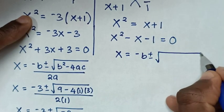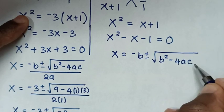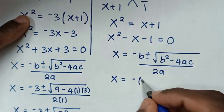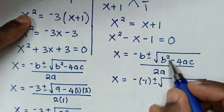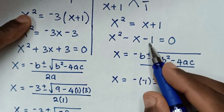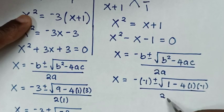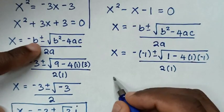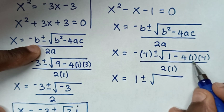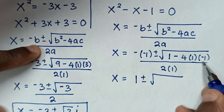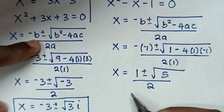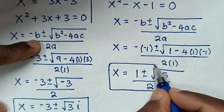For the second quadratic x squared minus x minus 1 equal to 0, applying the quadratic formula with a equal to 1, b equal to negative 1, c equal to negative 1: x equals negative negative 1 plus or minus square root of negative 1 squared minus 4 times 1 times negative 1, over 2 times 1. That gives x equal to 1 plus or minus square root of 1 plus 4, over 2, which is x equal to 1 plus or minus square root of 5, over 2. This is the real solution.